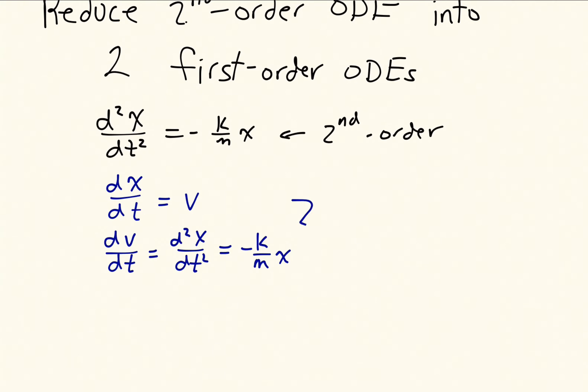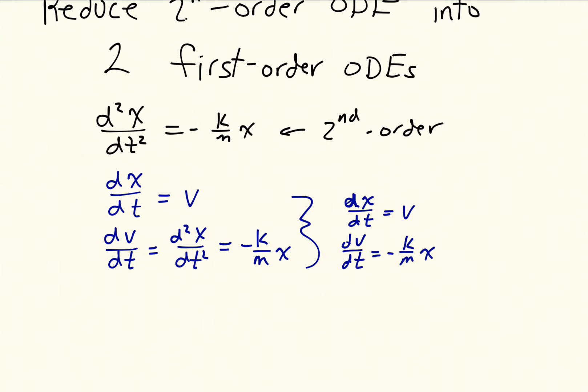And I know that this is minus k over m x. So if I look at what I just did here, I have dx dt is equal to v. And I have dv dt is equal to minus k over m x. Now this is two first-order differential equations that describe this system. So I've reduced the problem to what we need.